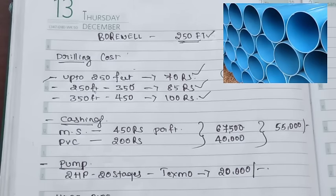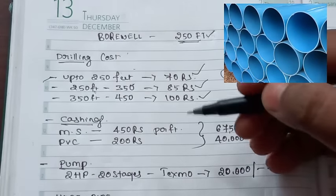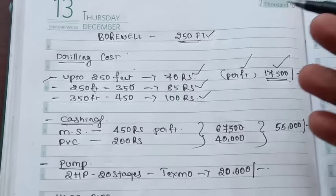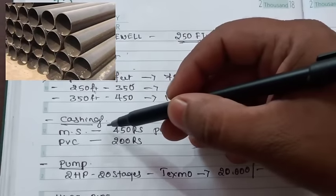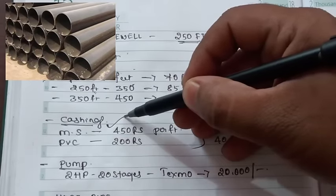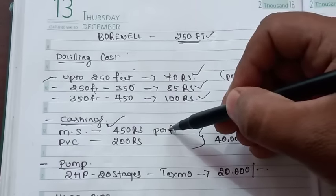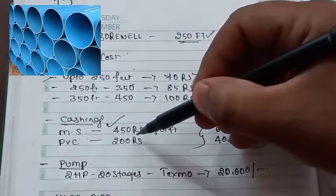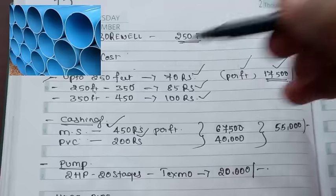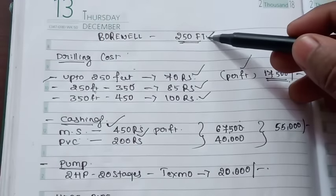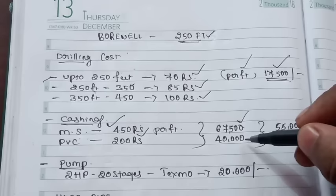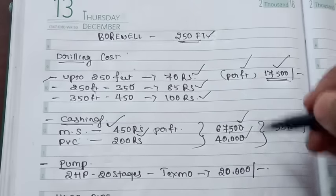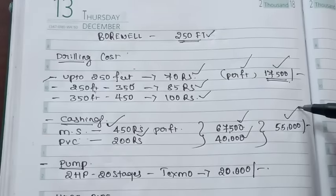The next item is casing pipe. For casing, MS pipe is 450 rupees per foot and PVC is 200 rupees per foot. For 250 feet, MS casing is 67,500 rupees and PVC is 40,000 rupees. The average is about 55,000 rupees.